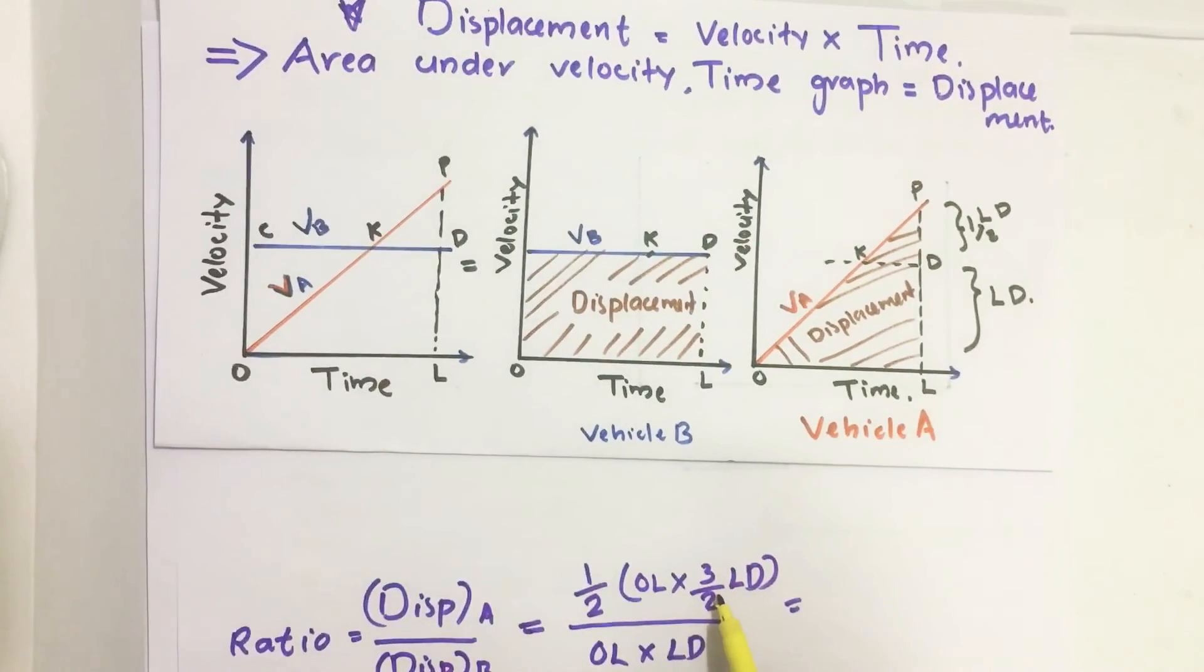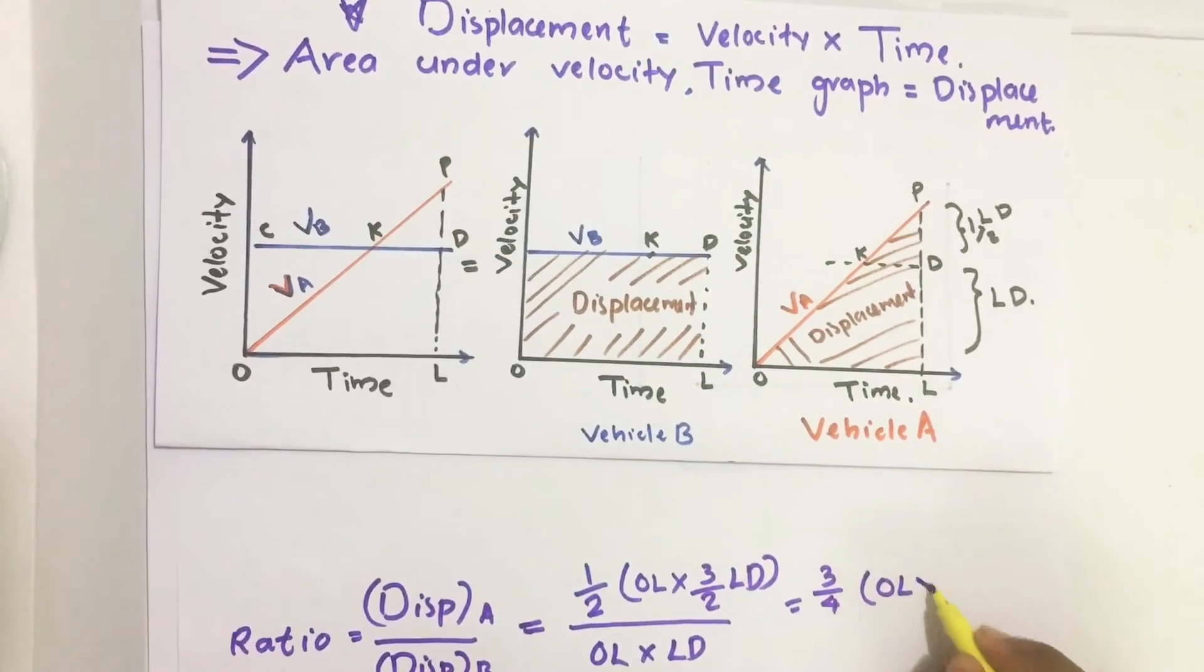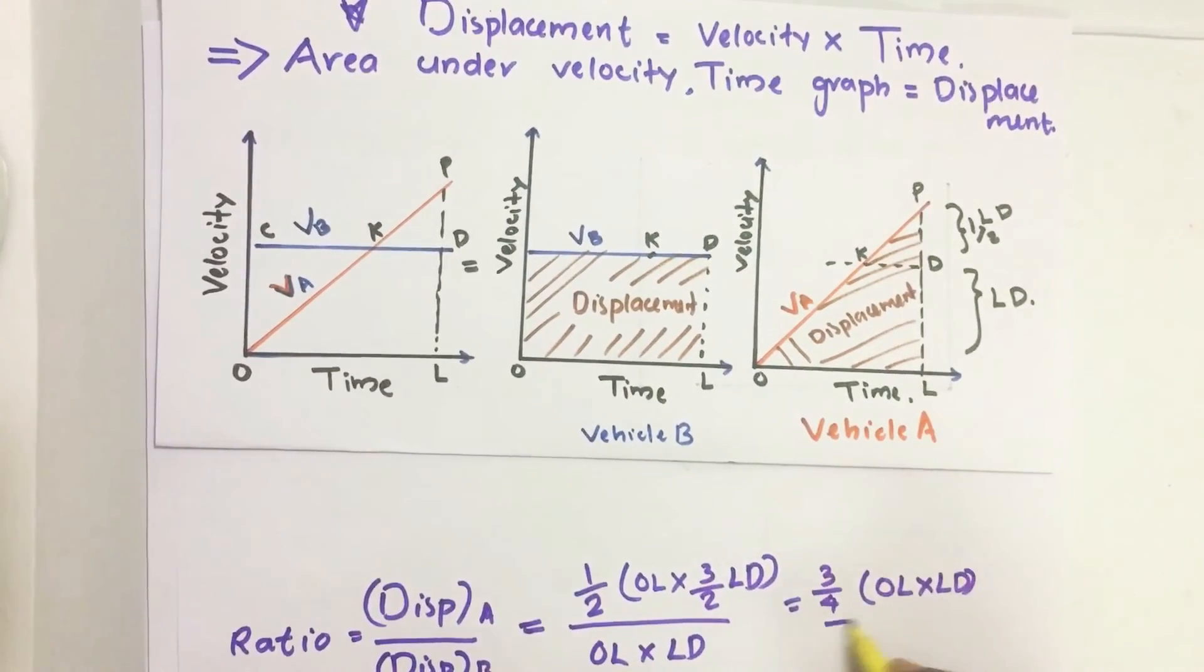Let's take this 1 by 2 and 3 by 2 together. We get 3 by 4 into OL into LD.